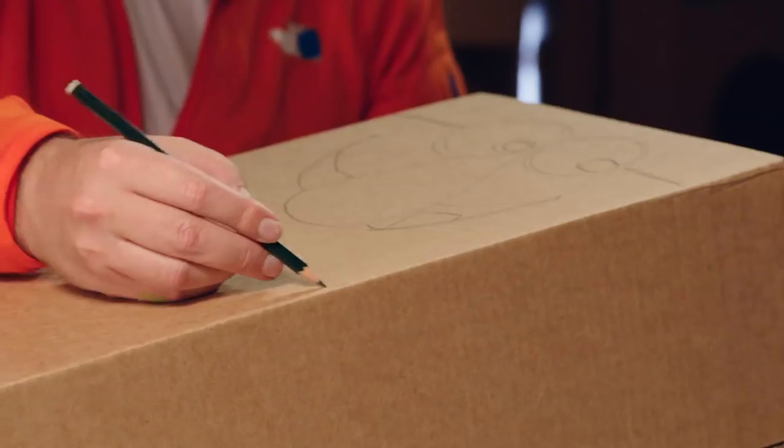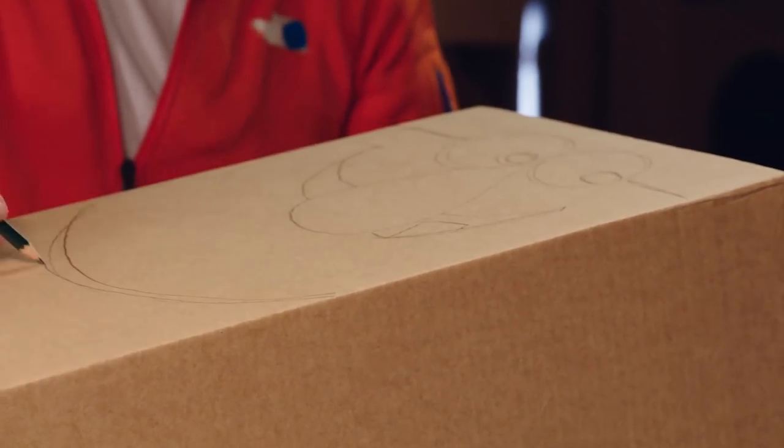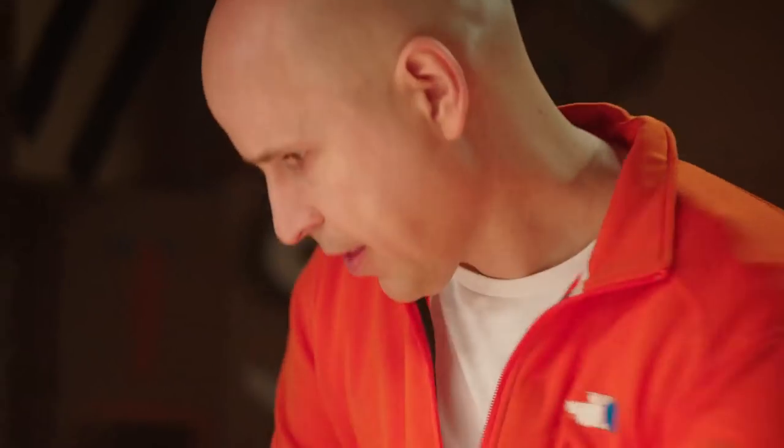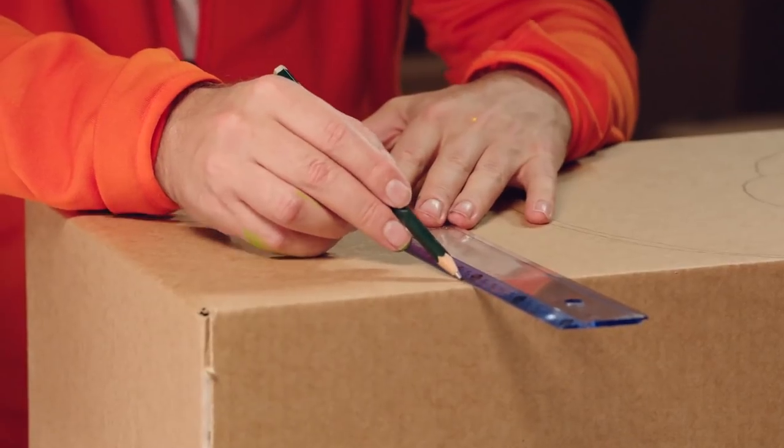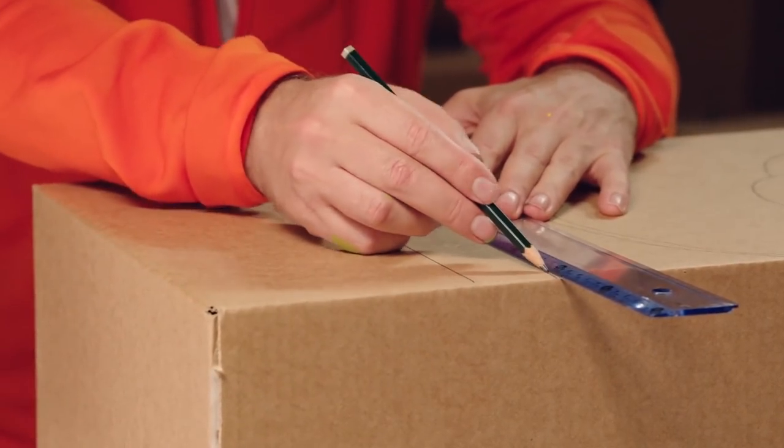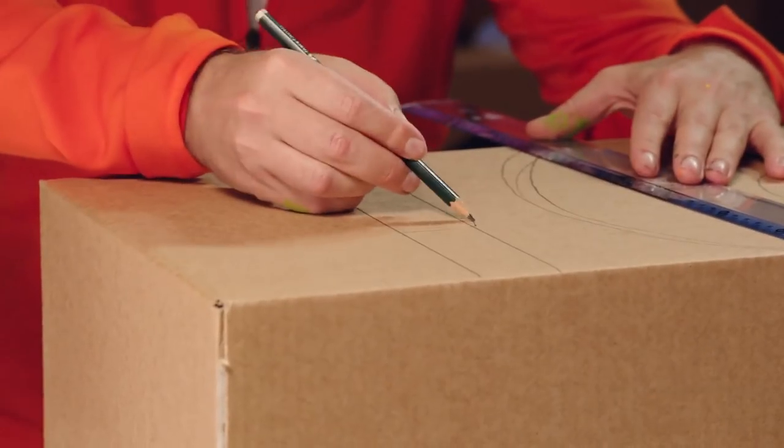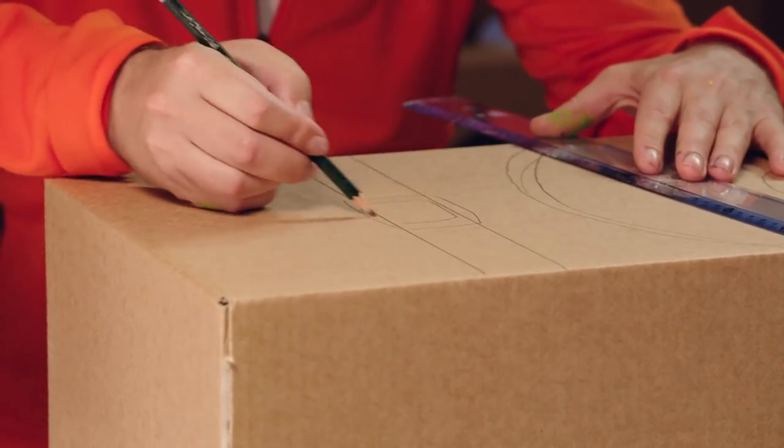Next, draw a beard below his nose. And further down, a belt. I'm using a ruler to get the lines nice and straight. Draw a belt buckle halfway across so his trousers don't fall down.